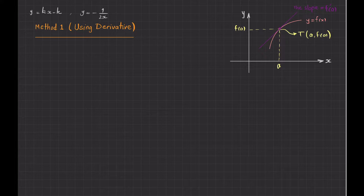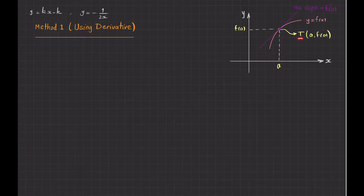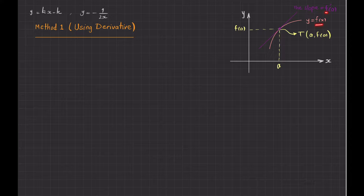Let us assume that the x-coordinate of this point is a. Because this point lies on the curve with equation y equals f of x, the y-coordinate will be f of a. So the point of tangency T has coordinates (a, f(a)). If I want to find the slope of the tangent line at that point, I need to calculate the derivative of f and evaluate it at a, which is the x-coordinate of the point of tangency.